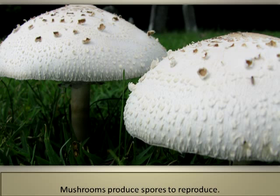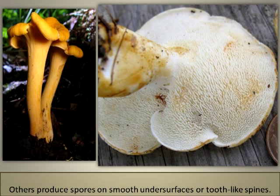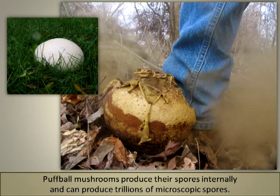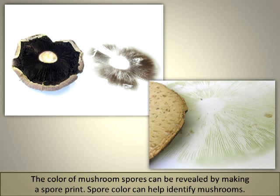Mushrooms produce spores to reproduce. Some mushrooms produce spores on gills under the cap. Others produce spores on smooth undersurfaces or tooth-like spines. Puffball mushrooms produce their spores internally and can produce trillions of microscopic spores. Other mushrooms produce spores in tube-like pores under the cap. The color of mushroom spores can be revealed by making a spore print, and spore color can help identify mushrooms.